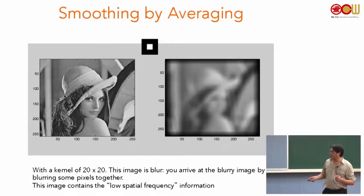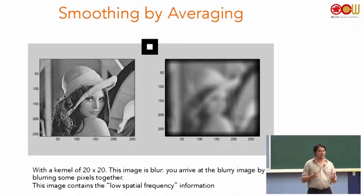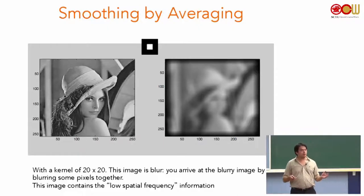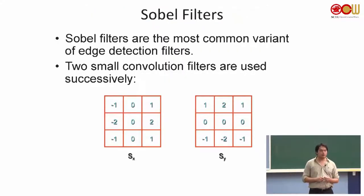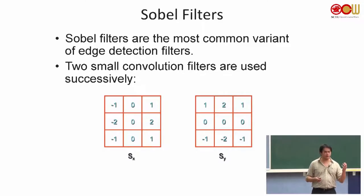If you have a kernel of 20×20, you can imagine that the famous Lena image from the computer vision textbook will become very blurry. So this is smoothing by averaging. Now we want to dig into the second topic you need to understand for edge detection.